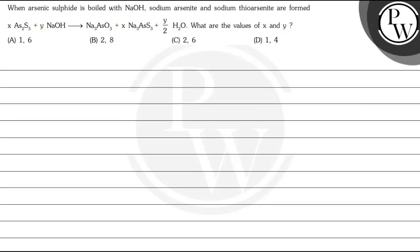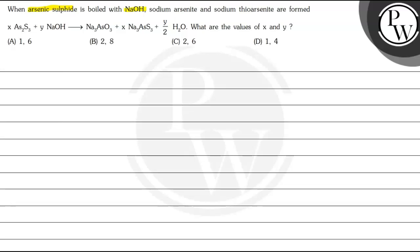Hello students, let's see this question. The question is when arsenic sulfide is boiled with NaOH, sodium arsenide and sodium thioarsenide are formed. There is a reaction given here in which X and Y are present. What are the values of X and Y? So we have to find out the values of X and Y in the equation.